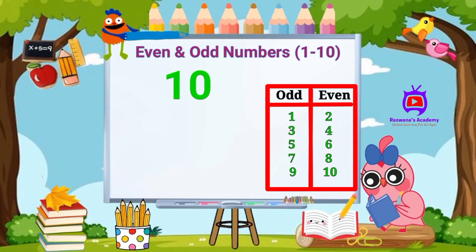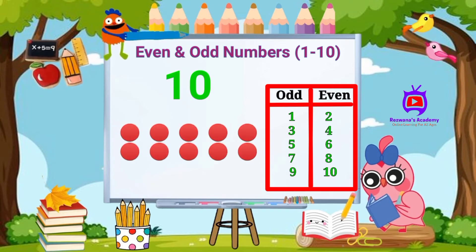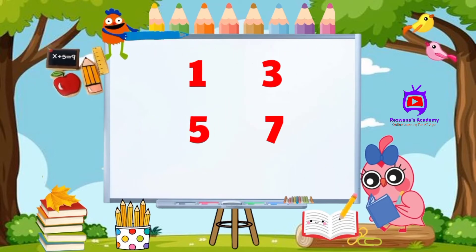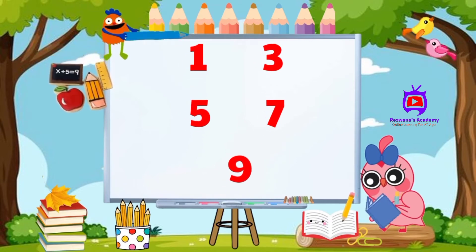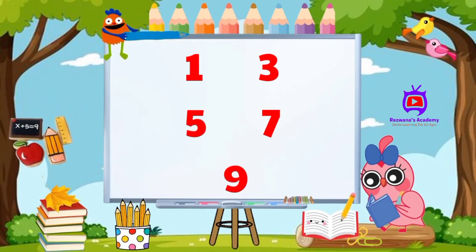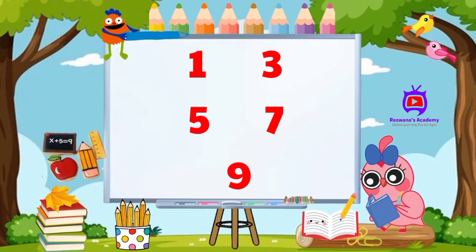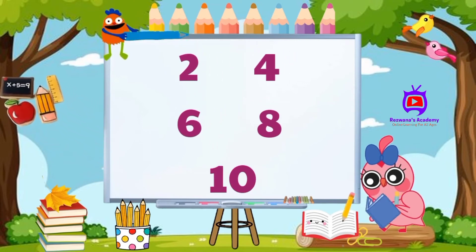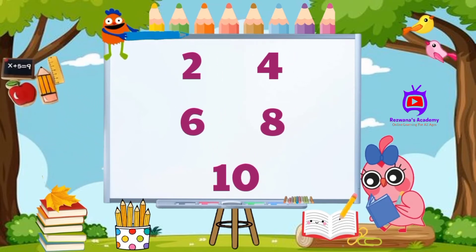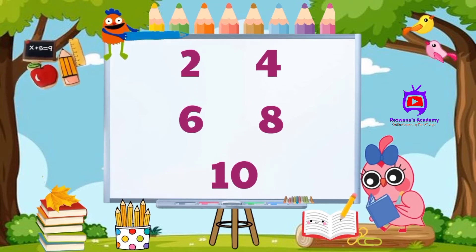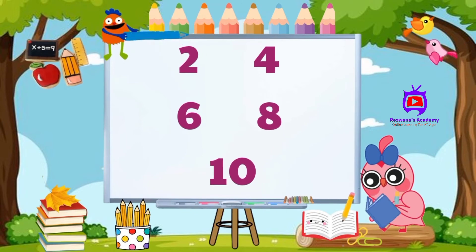Number ten — ten dots. Groups of two, nothing left, so ten is an even number. So one, three, five, seven, and nine are all odd numbers because when we split them into groups of two, one is always left alone. Two, four, six, eight, and ten are all even numbers because they can all be split into exact groups of two.